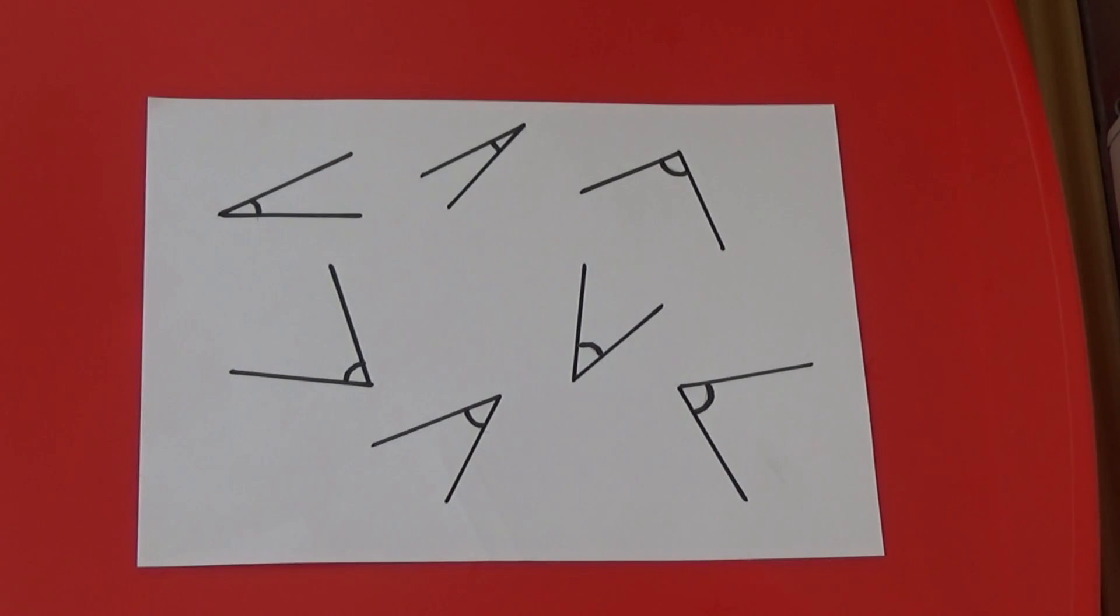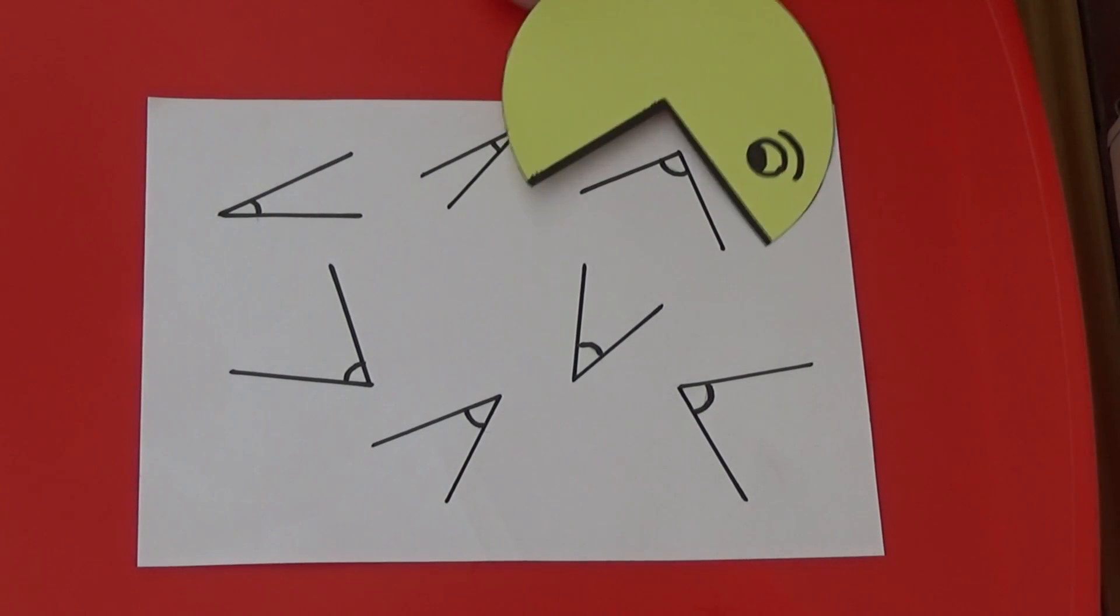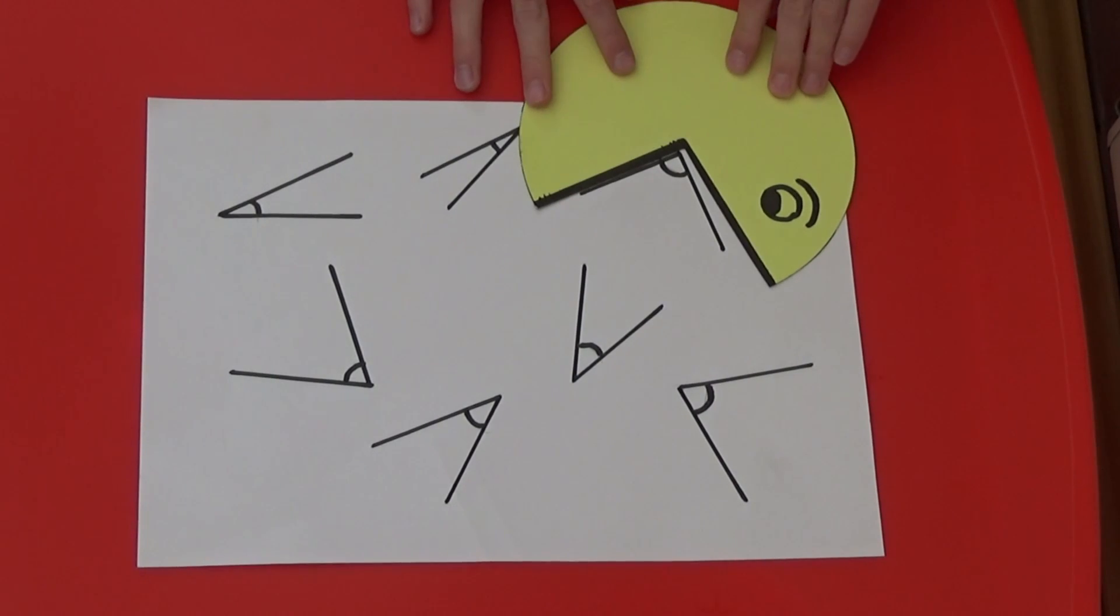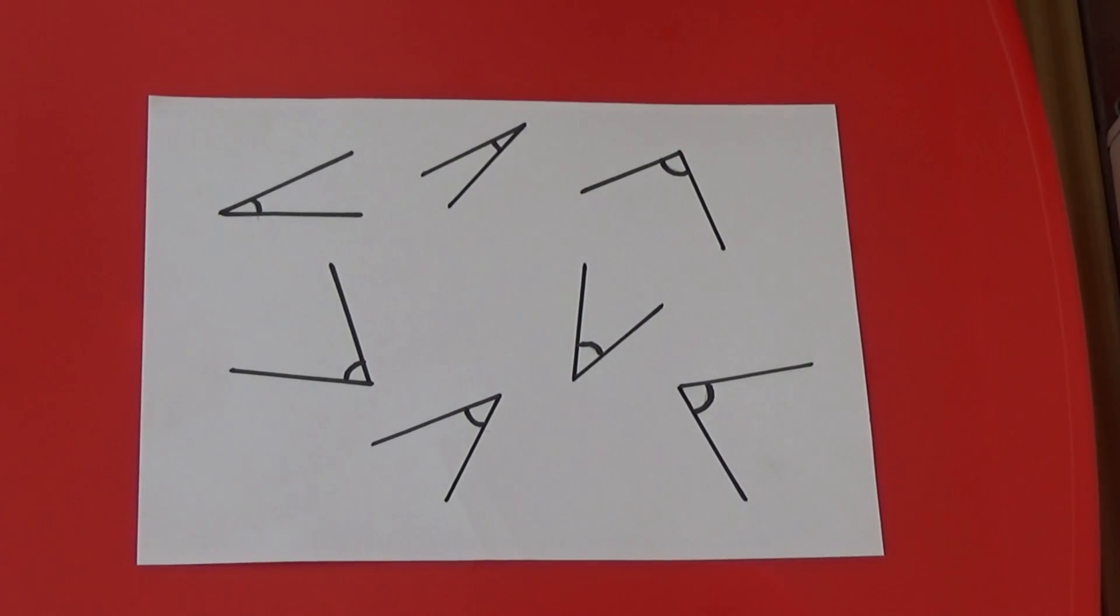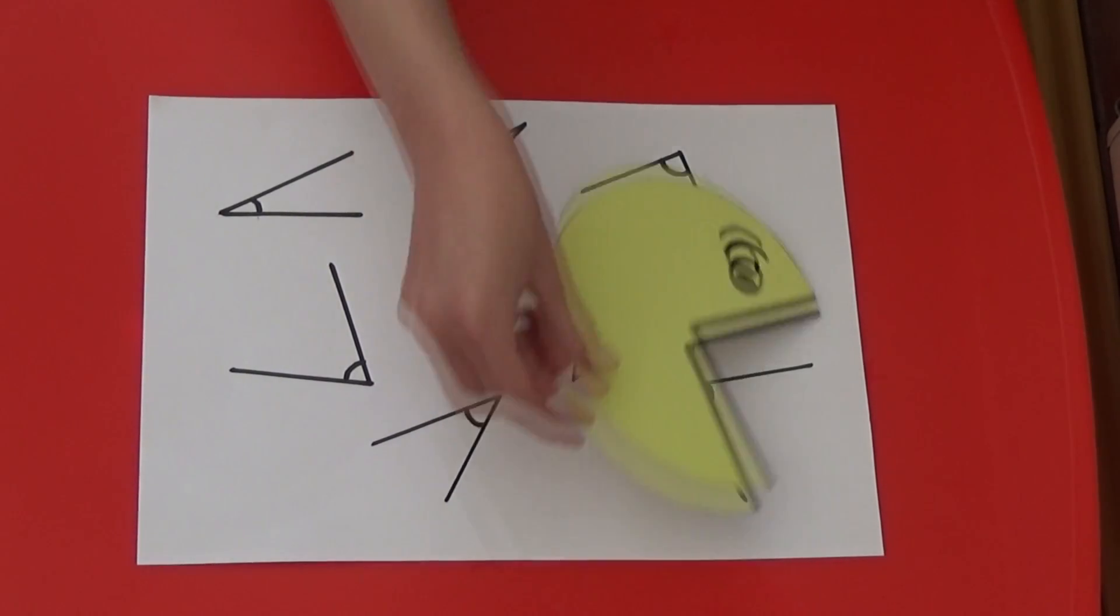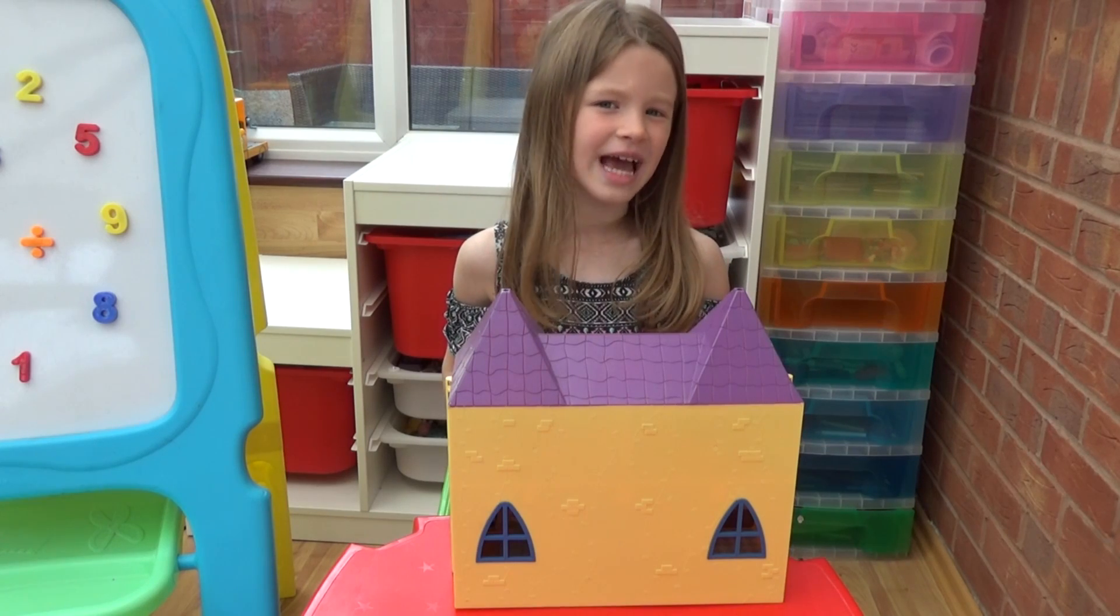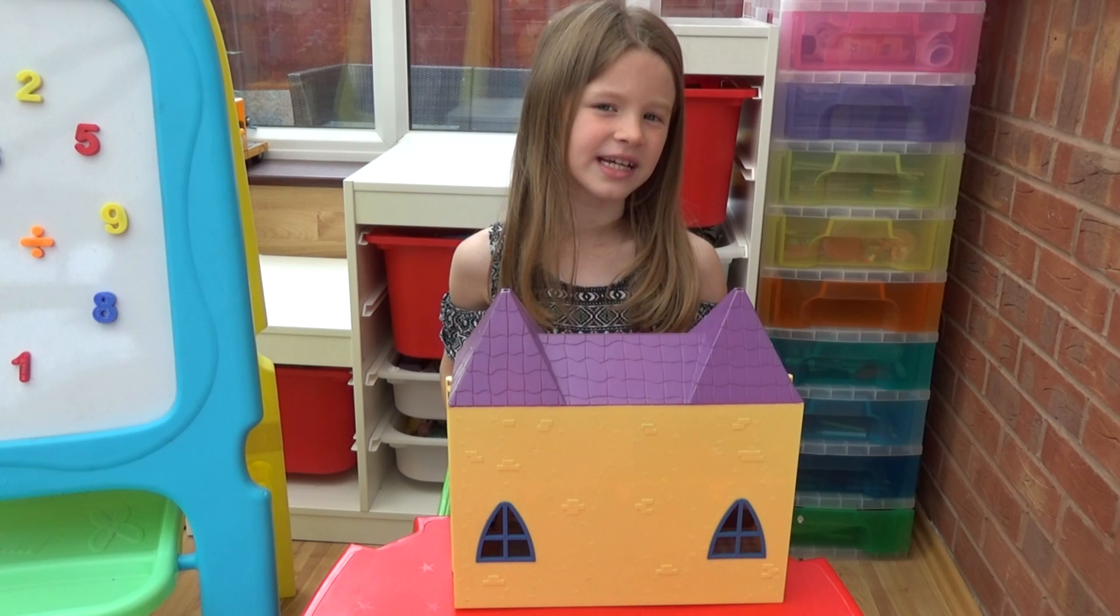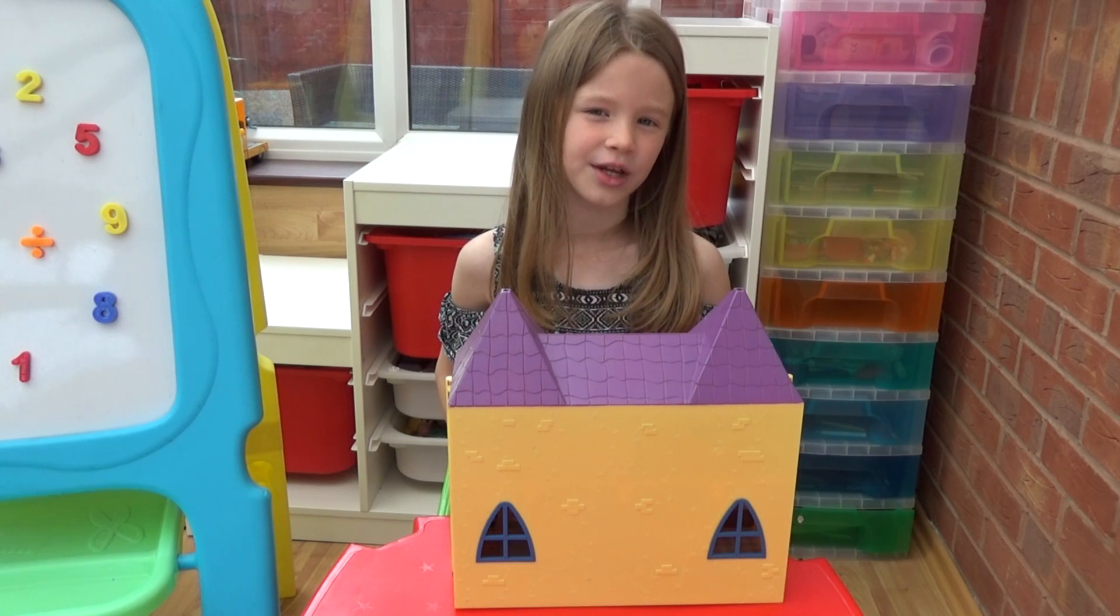Acute angles are angles which are smaller than a right angle. If we aren't sure by just looking at an angle we can check it using our right angle tester. We can also use a right angle tester to check if things around us are acute angles.